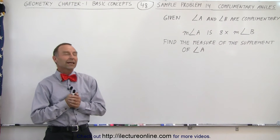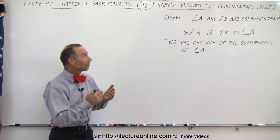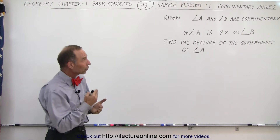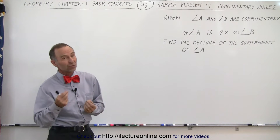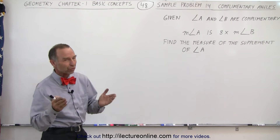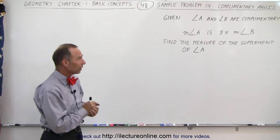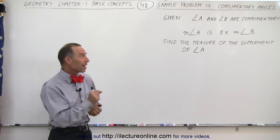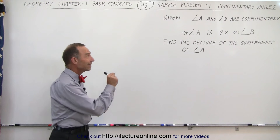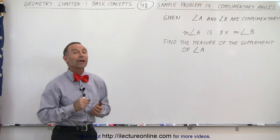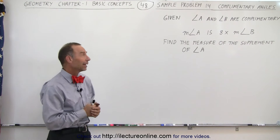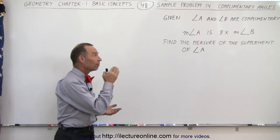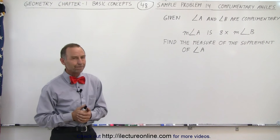Welcome to ElectronLine. Here we're given two angles A and B, and we're told that the two angles are complementary, which means that the measure of the two angles add up to 90 degrees. Then we're told that the measure of angle A is eight times the measure of angle B, and they ask us to find the measure of the supplement of angle A.